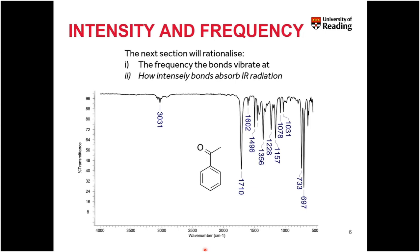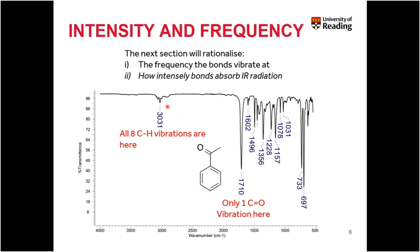That explains how we rationalize the frequency of vibrations we observe. But what about understanding peak intensity? Looking at an infrared spectrum for a molecule with eight carbon-hydrogen bonds, we see only a very small absorbance. Yet a single carbon-oxygen double bond gives a peak at 1,710 wavenumbers that is many times larger than the peak at 3,000 wavenumbers. So why is this?